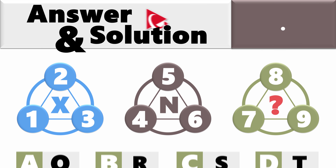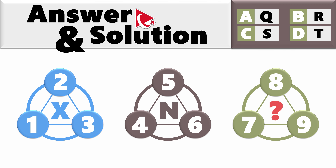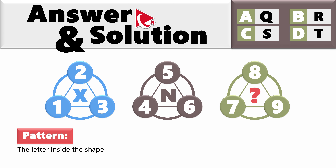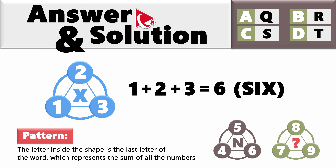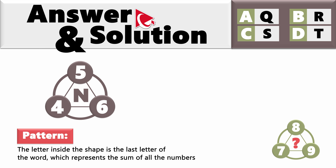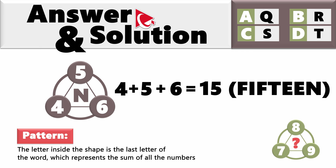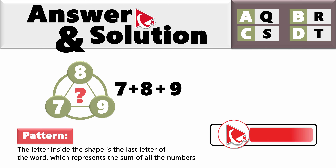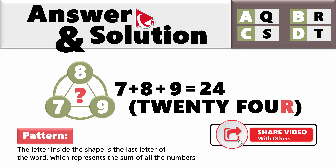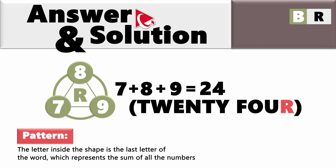We're about to explore the twists and turns of this brain teaser. The trick here is to determine the pattern, and it's extremely simple: the letter inside the shape is the last letter of the word which represents the sum of all the numbers. In the first shape, 1 plus 2 plus 3 equals 6 — the last letter of 'six' is X. In the second shape, 4 plus 5 plus 6 equals 15 — the last letter of 'fifteen' is N. Now, 7 plus 8 plus 9 equals 24. The last letter of 'twenty-four' is R. So the correct answer is choice B, R.